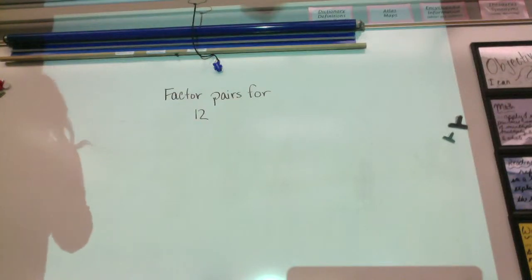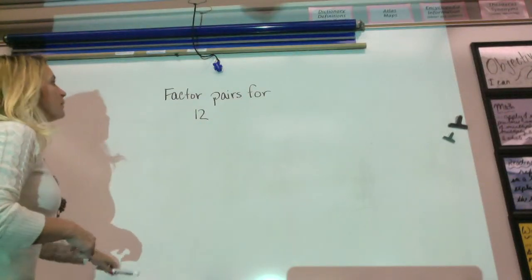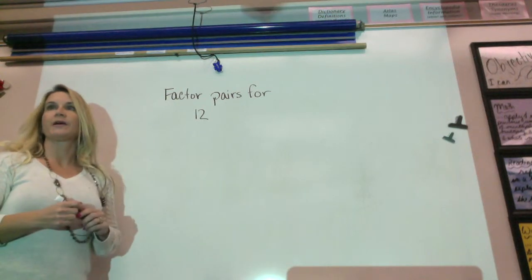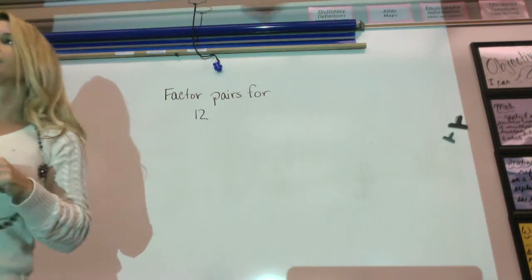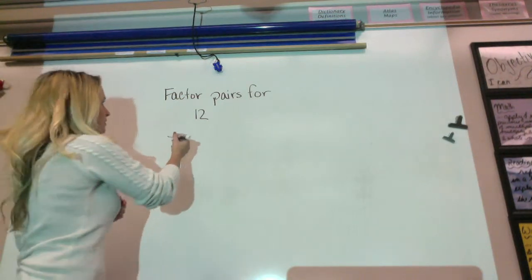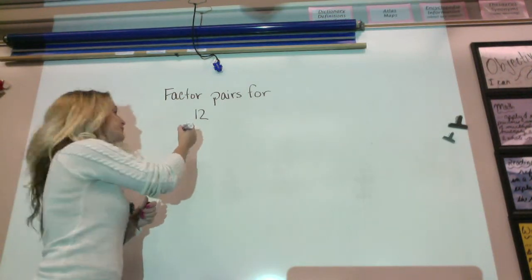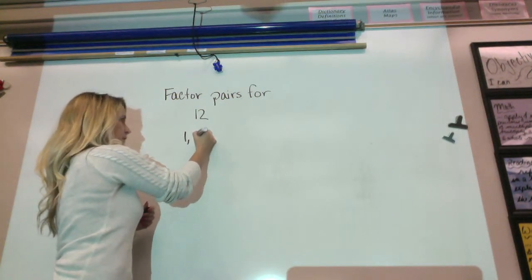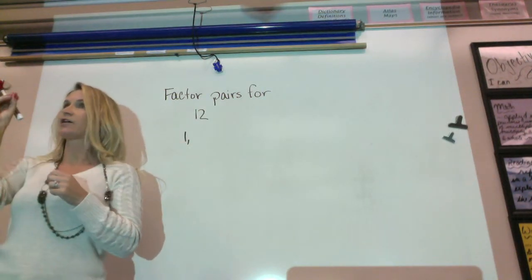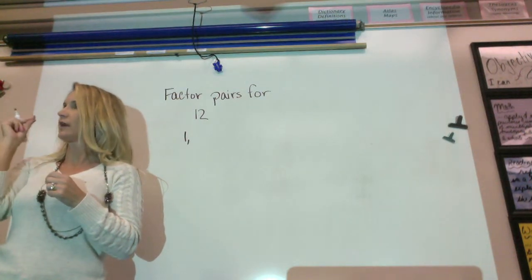Alright, so I asked you to list all the factor pairs for 12. Who would like to share with me what they have? Rachel, what's one of your factor pairs? One. And? No, one, it's a factor pair. It's the two factors that go together. So what goes with one?